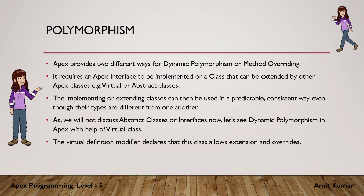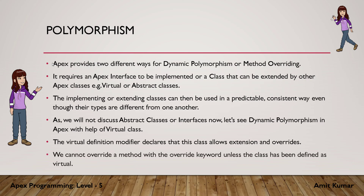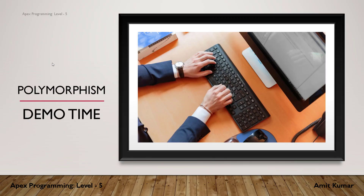The virtual definition modifier declares that a class allows extension and overrides. We cannot override a method with the override keyword unless the class has been defined as virtual. With method overriding, there would be a defined method available in the virtual class, and we are going to provide a new definition to that already defined method. With the help of subclasses, the same method can be defined differently and hence implemented differently.